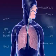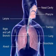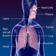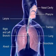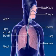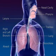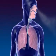The respiratory system moves air through the nose, pharynx, larynx, trachea, and bronchus to the alveoli, where the gas exchange between oxygen and carbon dioxide occurs.